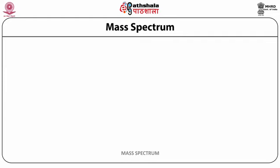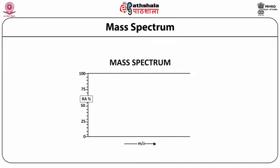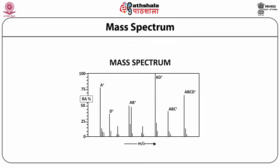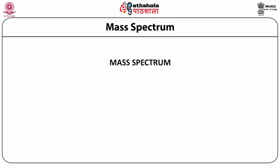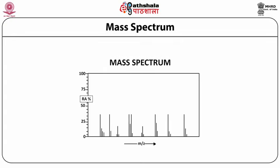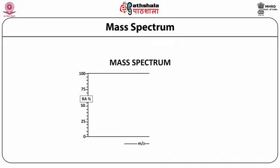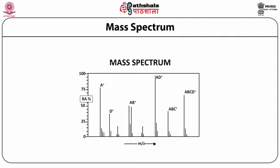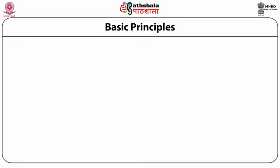A mass spectrum is shown in this slide. If we consider an organic molecule ABCD as a radical cation, it gives not only the molecular ion information but also many fragment ions: ABC⁺ due to loss of D, AD⁺ due to loss of B and C, AB⁺ due to loss of CD neutral radical, D⁺ as another fragment ion, and A⁺ as the last fragment ion formed in the mass spectrum of molecule ABCD.